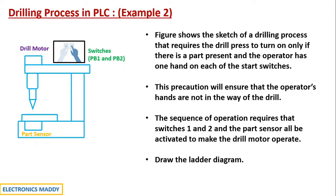They have given us a sketch of the drilling process that requires the drill press to turn on only if there is a part present and the operator has one hand on each of the start switches. So basically we have two push button switches, and this drilling operation should start only if there is a part that is recognized by the part sensor and both hands are on the push button switches. Only if both hands are used and the part is also available should the operation begin.